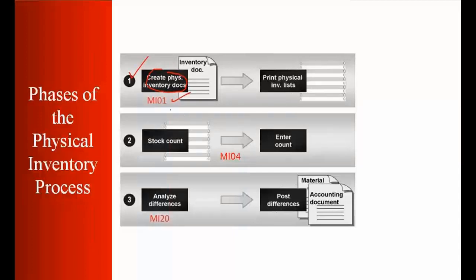In the second part, you can also print the document, which I'll show you later on. Then in the second part we do the stock count — counting the stock we have in the warehouse and entering the count in the SAP system. Third, we analyze the difference and do the posting. So there are three steps, and we're going to do that now.